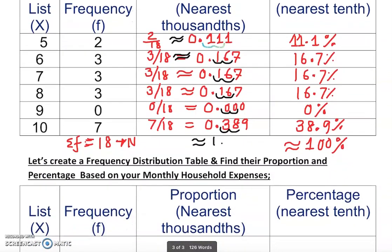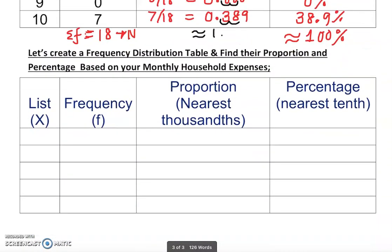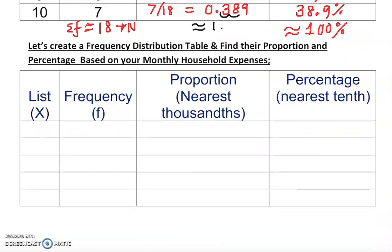Now let's move to another example. This time we're going to create a frequency distribution table and find proportions and percentages based on monthly household expenses.